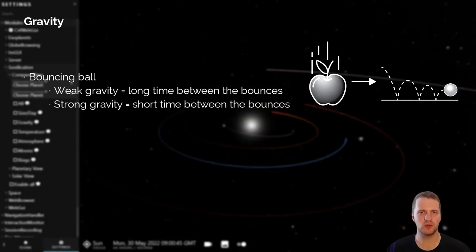Next we have the sonification of gravity, which is represented as an auditory icon of a bouncing ball, where a planet with a weaker gravitational force would cause the ball to have a longer airtime and more time between the bounces, compared to a planet with a stronger gravitational force, where the ball would be more attracted to the ground, causing a shorter time between the bounces.